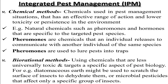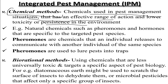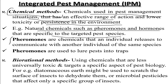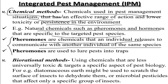The chemical method involves the use of chemicals that suppress pest growth — specifically chemicals with an effective range of action and lower toxicity or persistence in the environment. Natural chemicals such as pheromones and hormones specific to target pest species are used. Pheromones are chemicals released to communicate between individuals of the same species, and they are used to lure pests into traps.